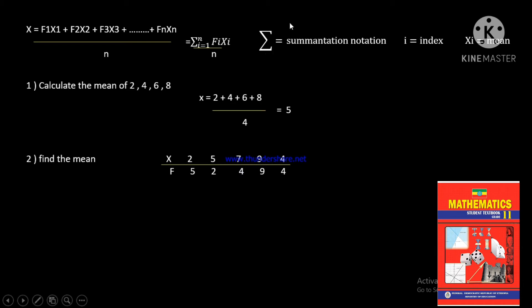In summation notation, the index i starts from 1 up to the power of n. The term fi is the frequency of an item, xi is the value of that item — this is a calculation for the mean.